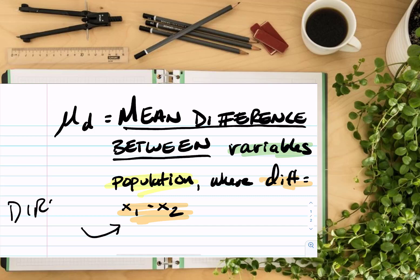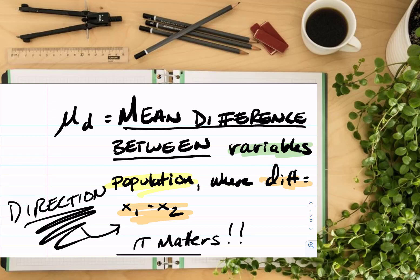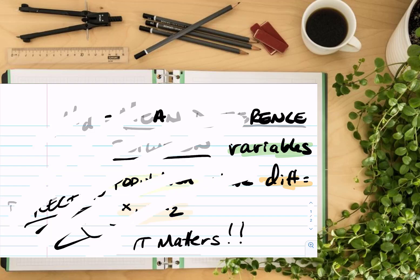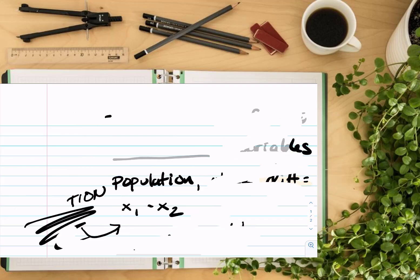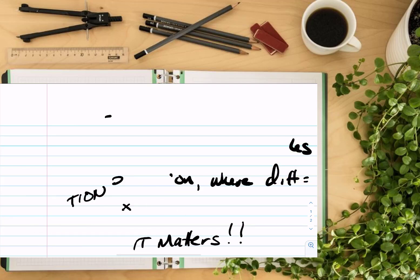So remember when we talked about how to find this type of data, we talked about x sub d and the x1 minus x2. Here the difference really does matter. The direction matters. And so that's an additional component we have with the mu sub d definition.